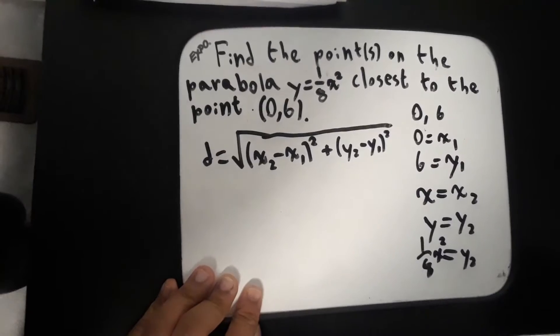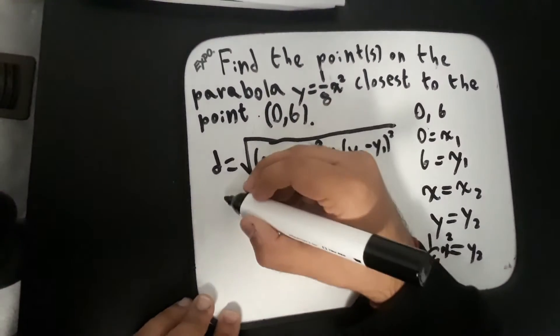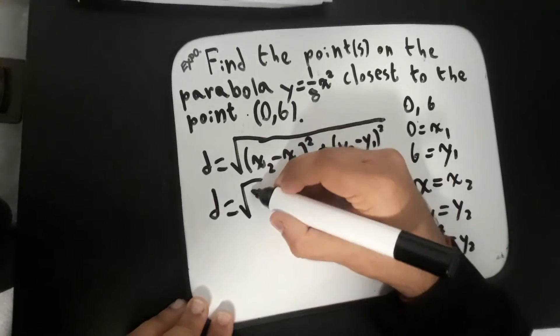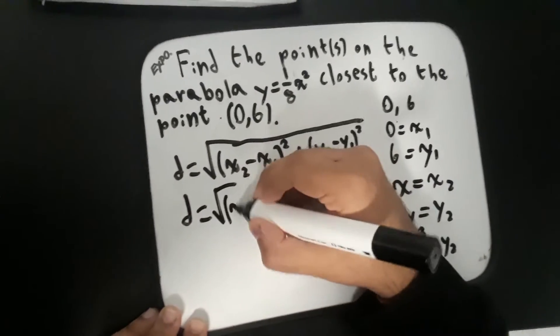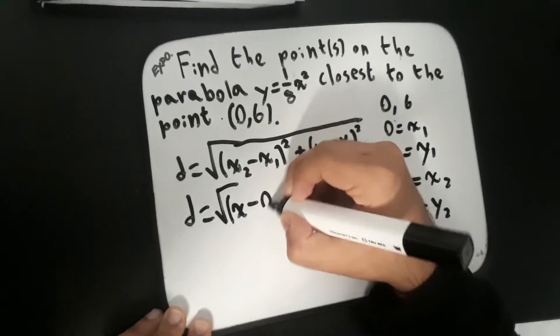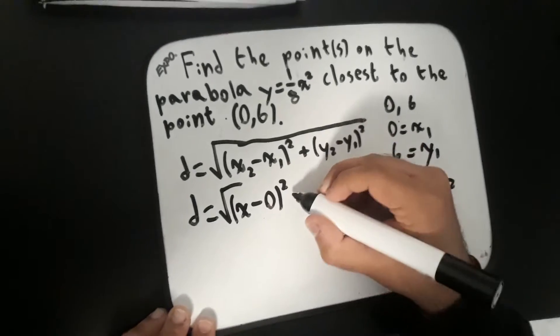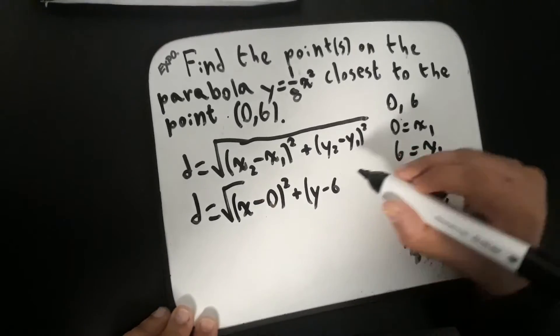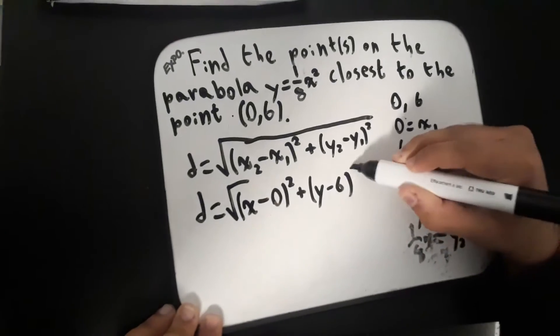So now, we plug these into the formula. d equals the square root of (x minus 0) squared plus (y minus 6) squared.